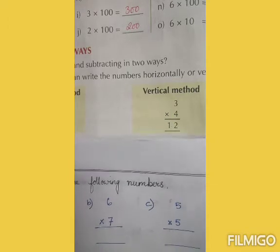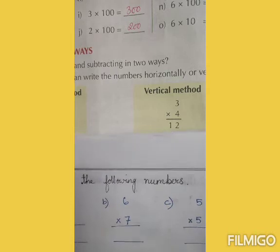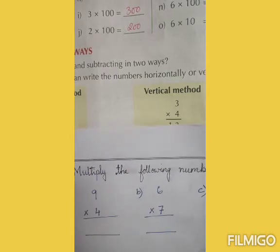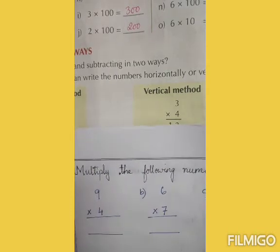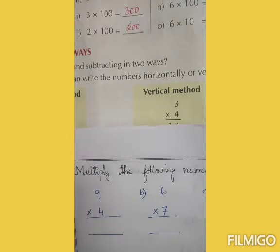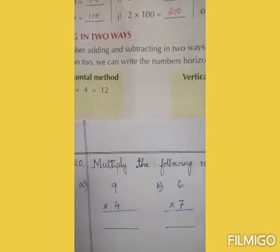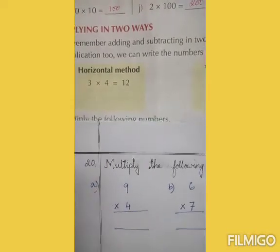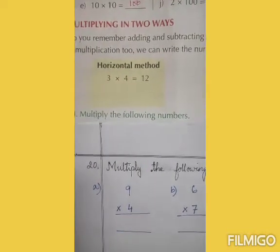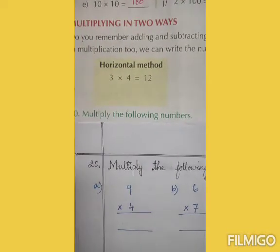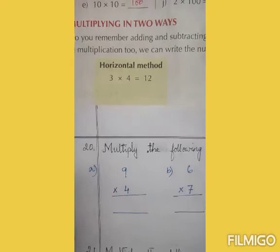So now we will do a few multiplications using the vertical method. Question number 20: multiply the following numbers.